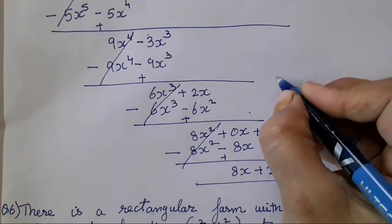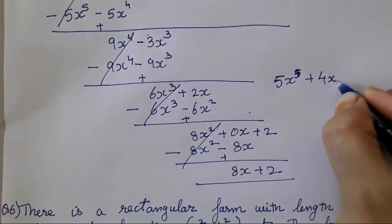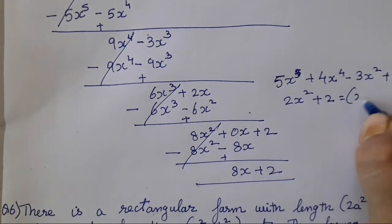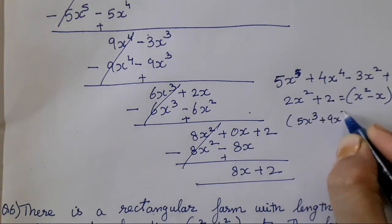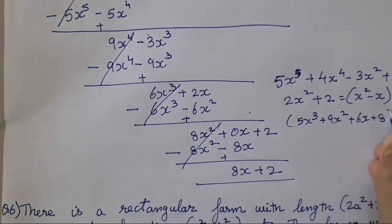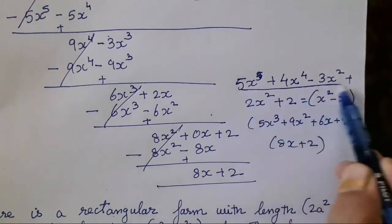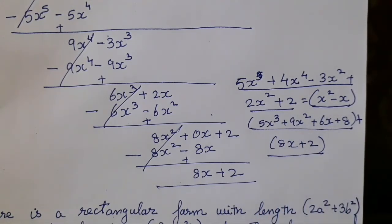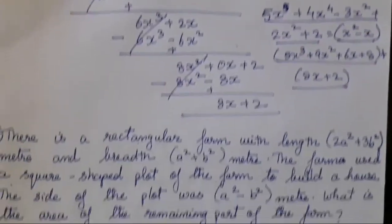So write it down: 5x⁵ plus 4x⁴ minus 3x² plus 2x² plus 2 equals x² minus x into 5x³ plus 9x² plus 6x plus 8 plus 8x plus 2. What I have done here — dividend, divisor, quotient, and remainder. This is important because it is given in the question — after solving, you all have to write it in this form, and it is very easy.